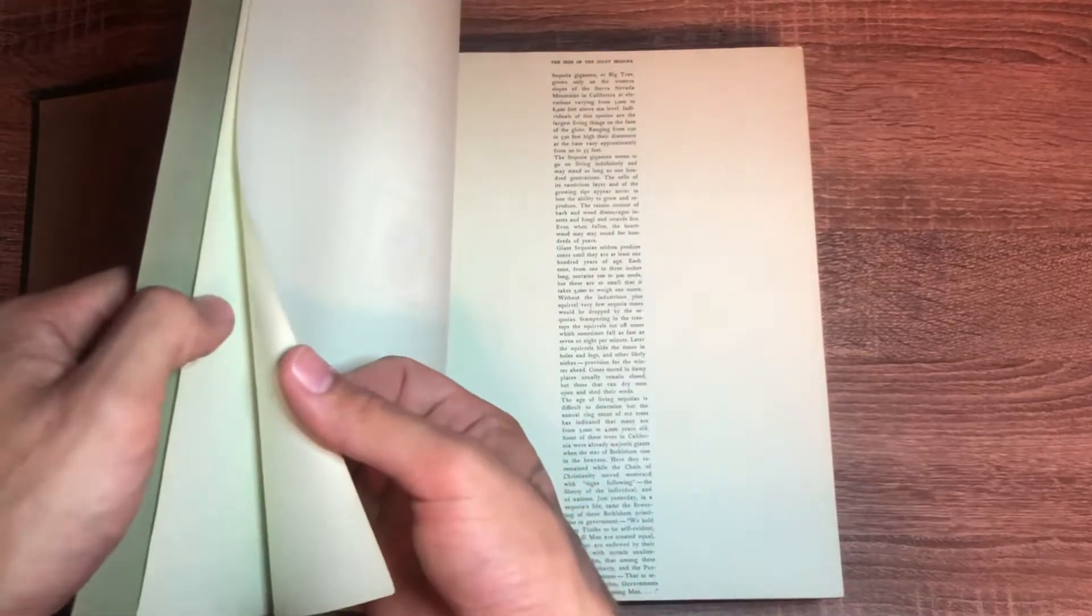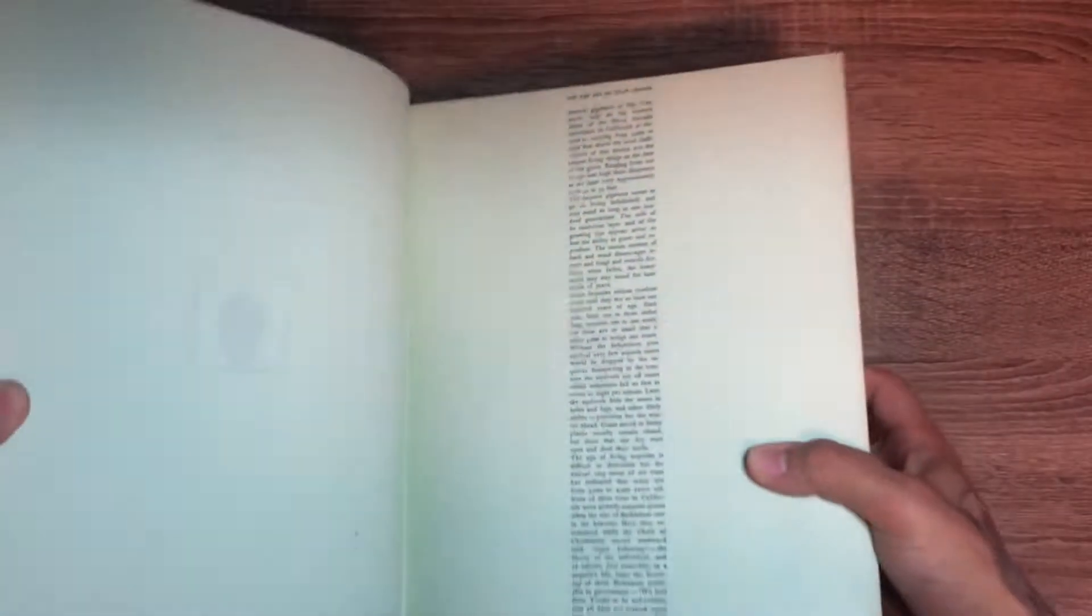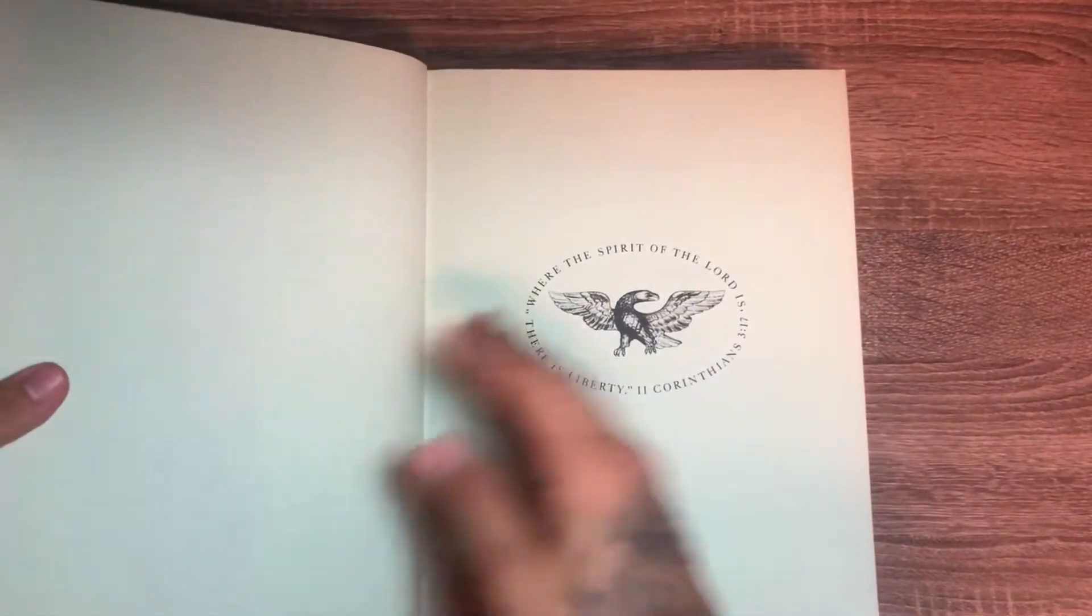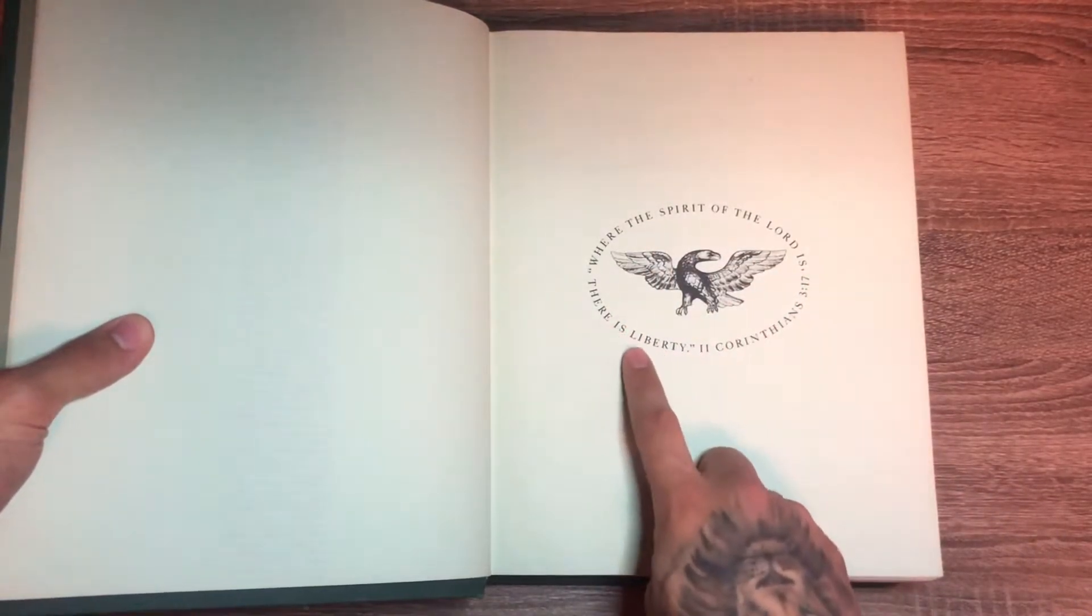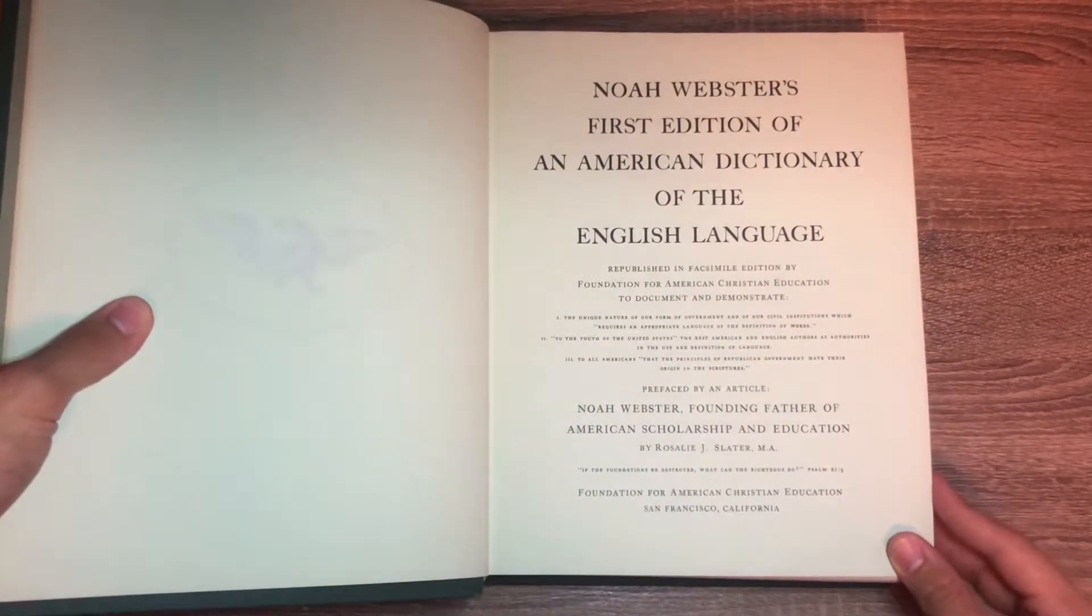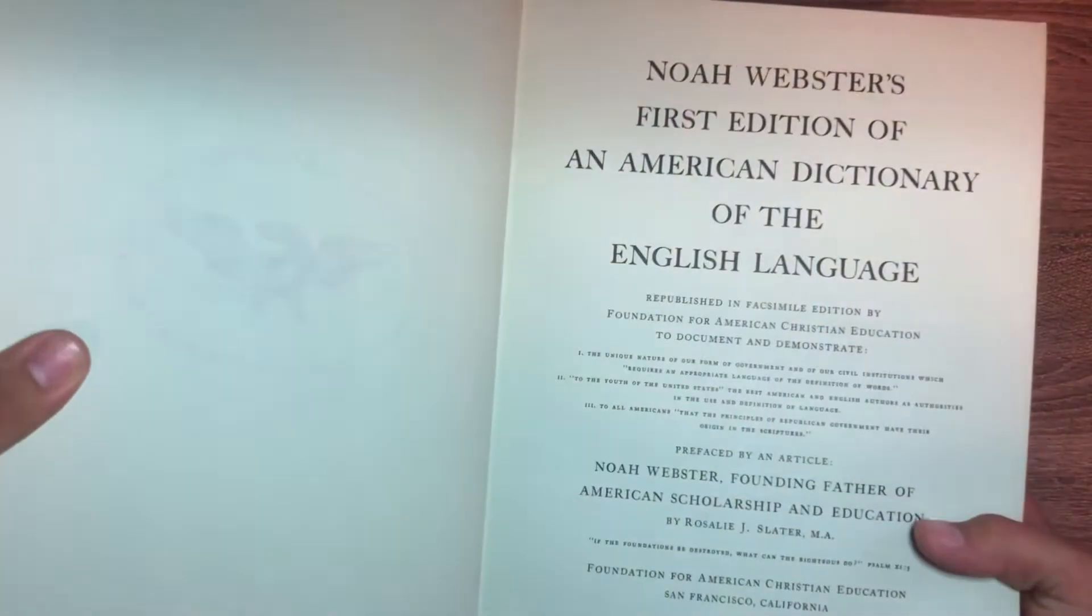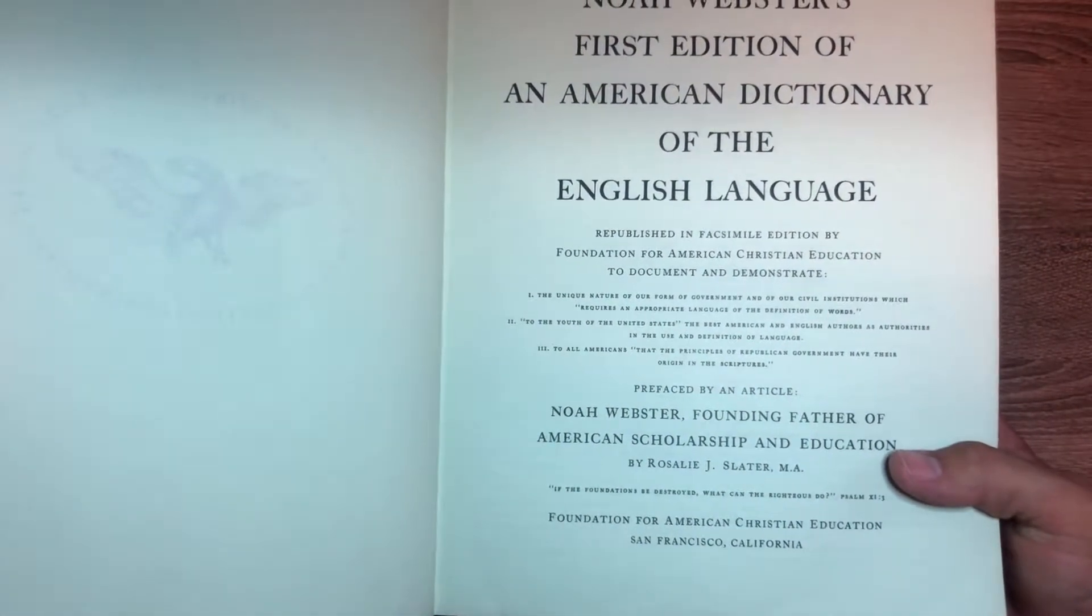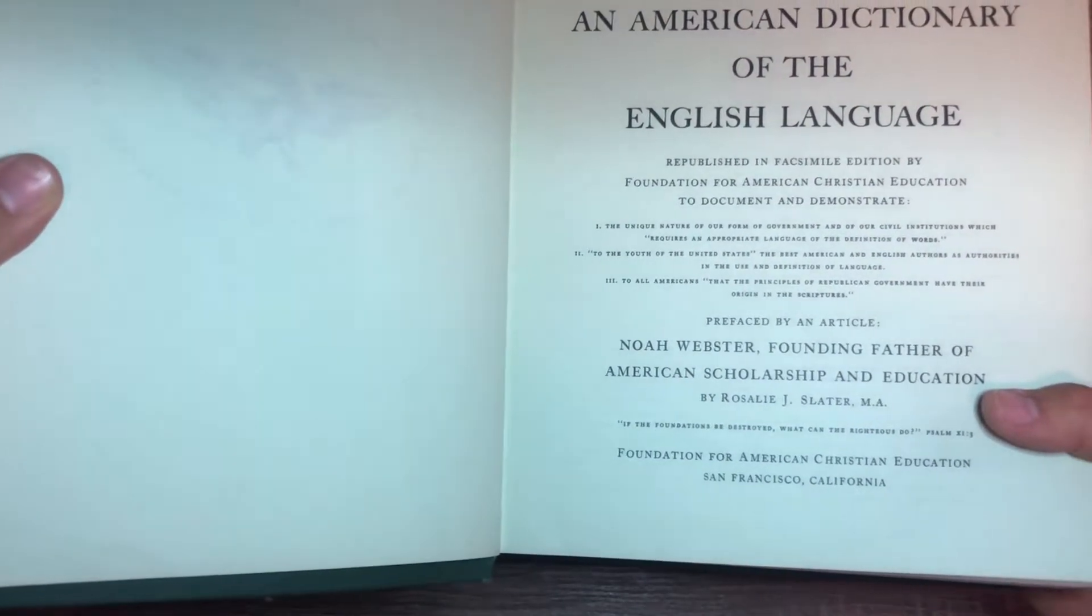This is the one that you want here. This I think is from the 80s. It's in very good condition. Where the spirit of the Lord is there is liberty. Noah Webster's first edition of an American Dictionary of the English Language. This is the facsimile edition.